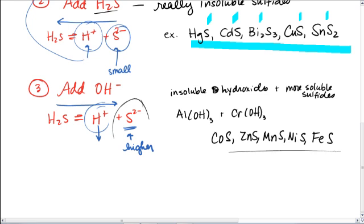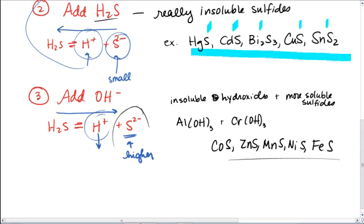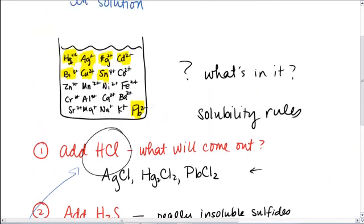Those will now precipitate out, because the concentration of sulfide will be high enough to cause a precipitate to occur. So if you think about the Q, it'll be high enough. So now, back to our list, that means we're precipitating out cobalt, zinc, manganese, nickel, iron, our aluminum, and our chromium are precipitating out here.